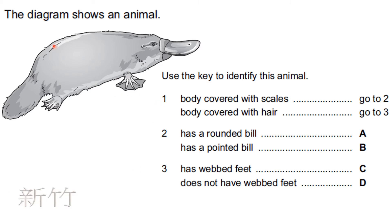The diagram shows an animal — use the key to identify it. Look at the first trait: is the body covered with scales or hair? You can see hair, so it goes directly to question three — no need to check question two. In question three: are the feet webbed or not webbed? The feet are webbed. So the answer is going to be C.